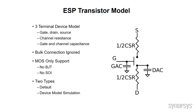It's a three-terminal device model with gate, drain, and source pins. There is no bulk connection — we simply ignore that in your netlist. There's a channel resistance, and a gate and channel capacitance. This is a MOS-only model; it does not support BJTs or SOI functionality. There are two types of models you have access to, from 7 nanometers to 180 nanometers. There's a built-in table that supports planar and FinFET devices. If you want more accuracy, there's a methodology for device model simulation to fill out those parameters for the channel resistance and capacitances.